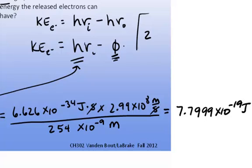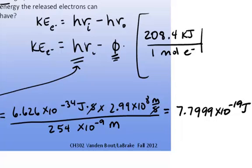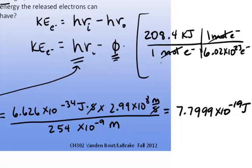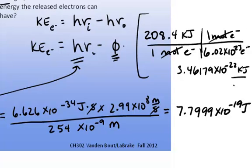Converting the work function: 208.4 kilojoules of energy per one mole of electrons, and one mole of electrons is 6.02 × 10²³ electrons — that's Avogadro's number. So converting gives us 3.46179 × 10⁻²² kilojoules per electron.